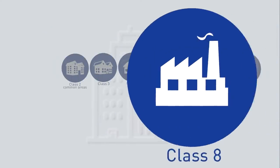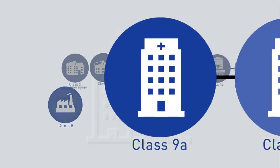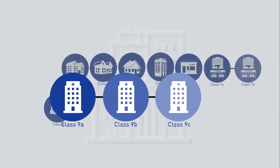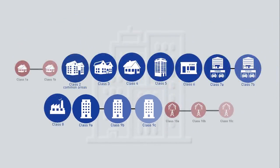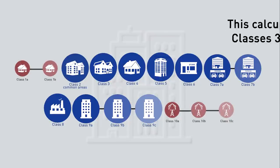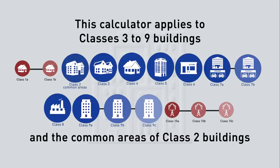While this provides greater design flexibility, correct calculations require you to enter a more detailed level of information to verify compliance. The facade calculator applies to classes 3 to 9 buildings, as well as the common areas of class 2 buildings. It can also accommodate mixed-use buildings.